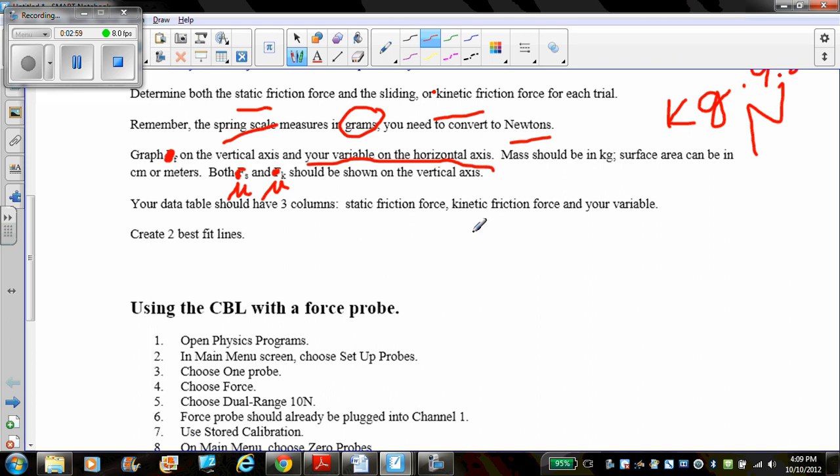So essentially you're going to create two graphs. You're going to create a graph with your variable. It might be mass, surface area, or surface type on the x-axis. And then you're going to have coefficient of static friction on the y-axis. Then you're going to do this again. Your variable. And then coefficient of kinetic friction. And again that's coefficient of friction not force of friction.